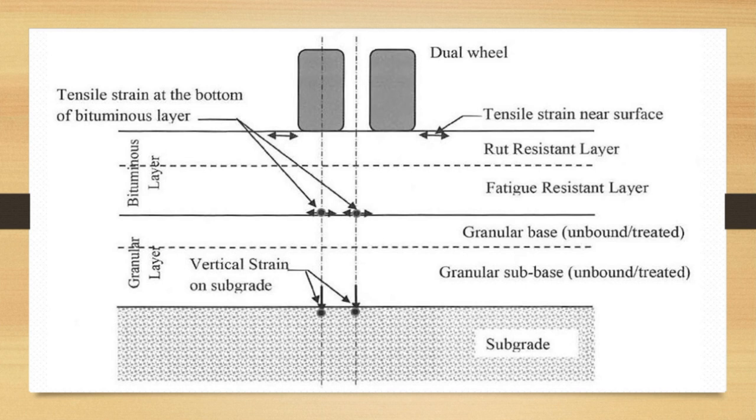Here you can see critical points considered at the middle of the dual wheels and at the center of the single wheel, at the bottom of the bituminous layer and at the top of the subgrade. The center-to-center distance between the dual wheels is 310 mm. Half of that—from the center of the dual wheel to the center of the single wheel where the critical point is located—would be 155 mm, which is taken as the radial distance for that particular point.